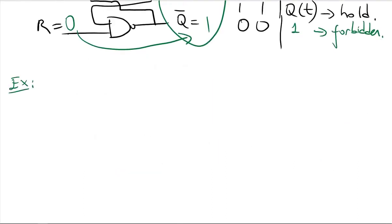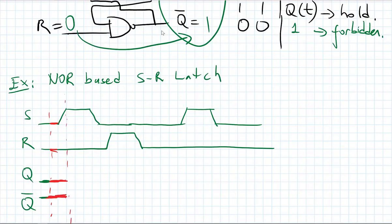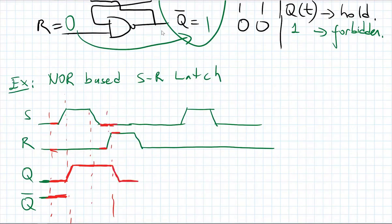Let's draw a timing diagram for the SR latch, assuming a NOR-based SR latch. Given S and R inputs, we want to find Q and Q-NOT. Initially, Q=0 and Q-NOT=1. At the start, both S=0 and R=0, so we keep Q=0 and Q-NOT=1. When S becomes 1, Q will become 1 — I am setting it. I keep Q=1. Then both S and R go to 0 again, so I hold the value. Then R becomes 1 and S=0, so I am resetting — Q becomes 0.